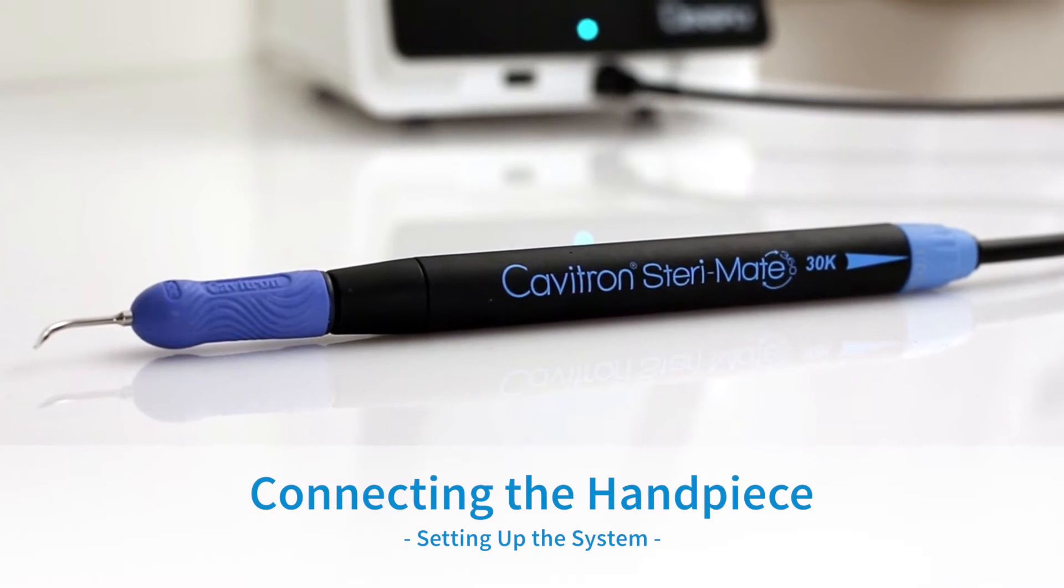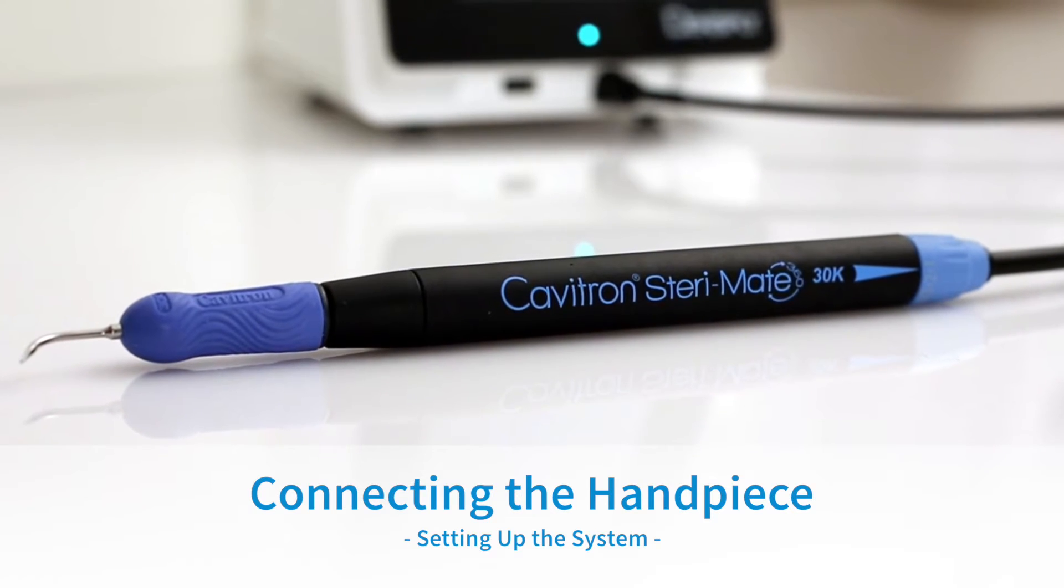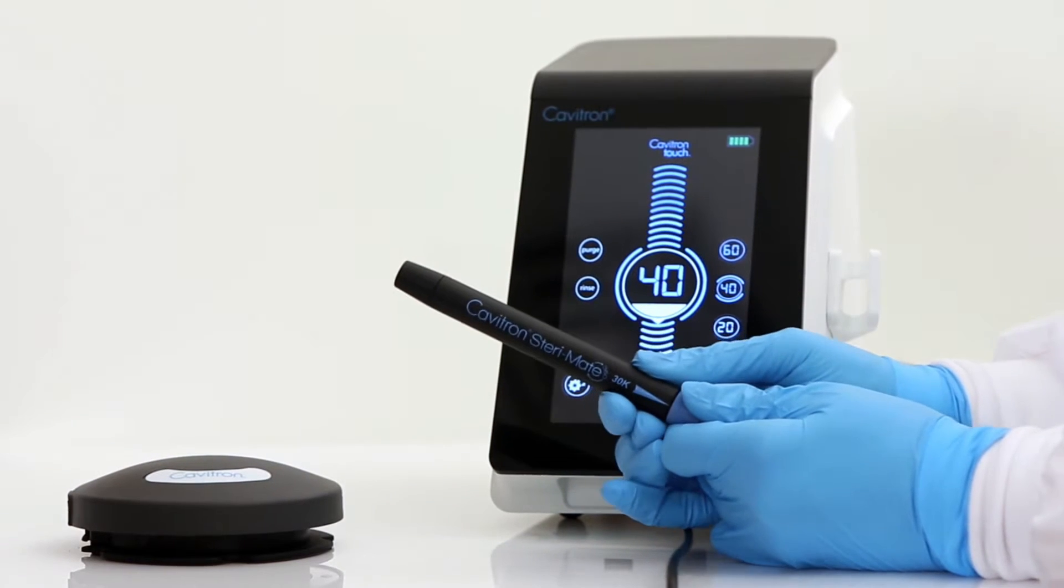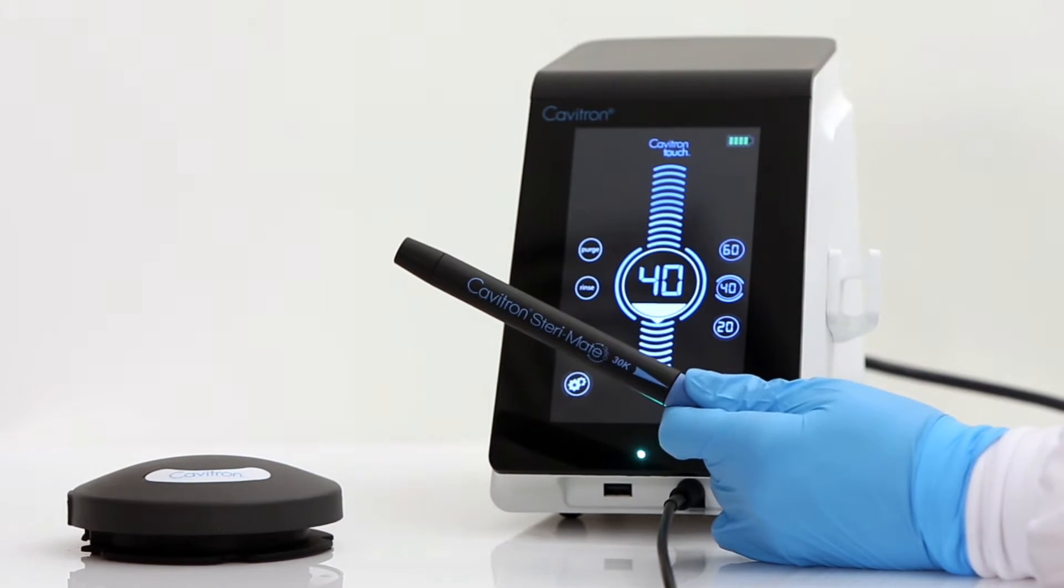Connecting SteriMate 360 handpiece to the Featherweight Detachable Handpiece Cord. To connect the SteriMate 360 handpiece, please insert the handpiece into the connection on the Featherweight Detachable Handpiece Cord.